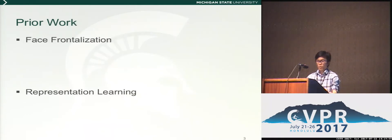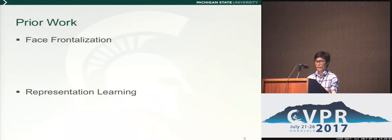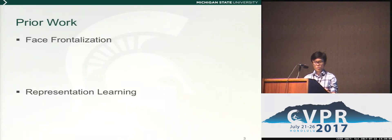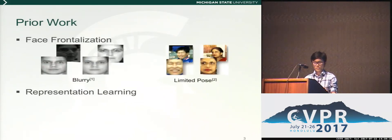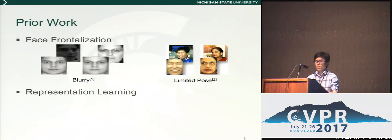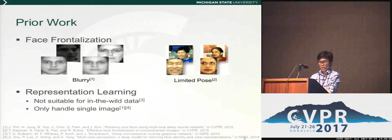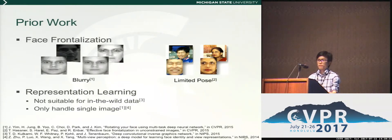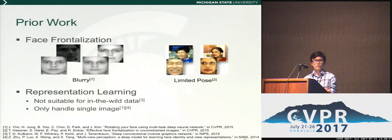There are two lines of prior work for pose-invariant face recognition, including face frontalisation and representation learning. For face frontalisation, most previous work can only produce blurry faces or can only work with near-frontal face images. For representation learning, one of the closest works is the inverse graphics network, but they learn invariant representations on synthetic data by using pairs of training samples that differ in only one variant, so that is not suitable for unstructured in-the-wild data.